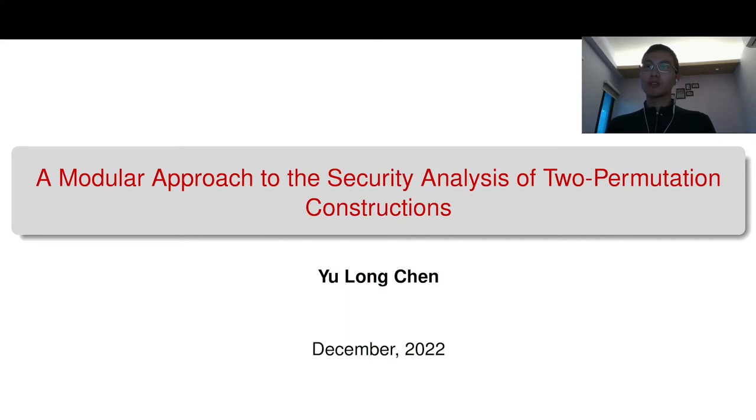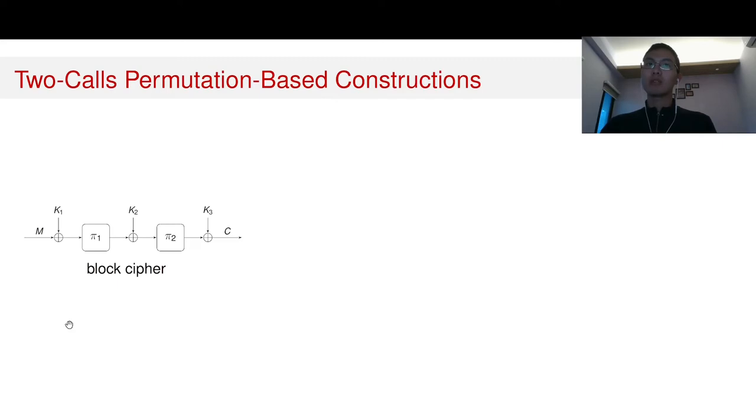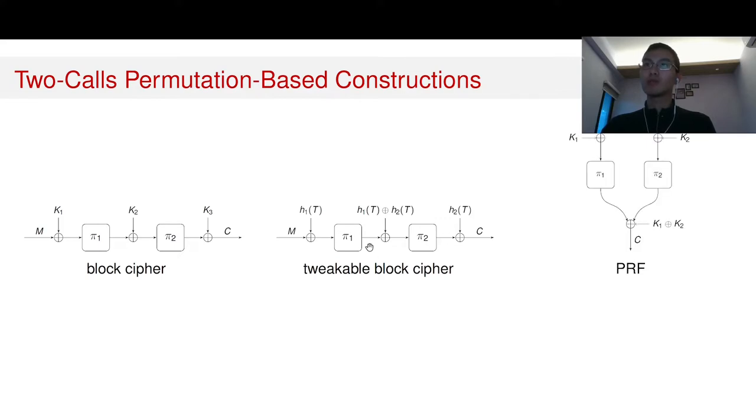Due to the SHA-3 hash function competition, more and more constructions are built on public permutations. Examples include block ciphers, for example, this two-round Even-Mansour with three-round block ciphers, this three-round Even-Mansour.